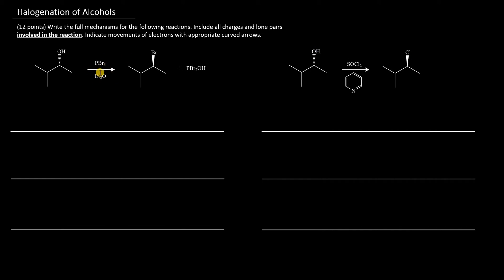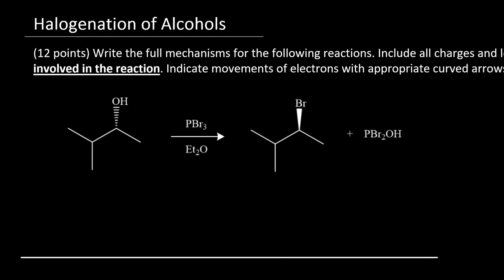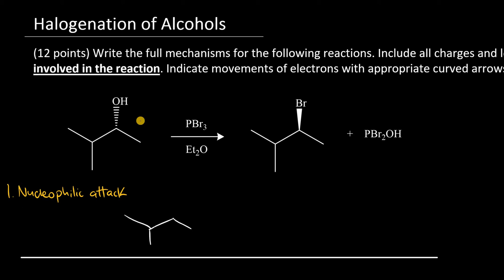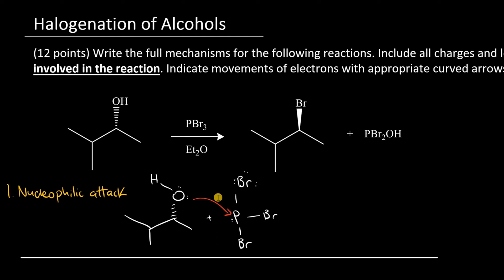The solvent for PBr3 is usually inert. The first step in the reaction is the nucleophilic attack of oxygen onto the phosphorus in phosphorus tribromide. We draw our reactant alcohol, and in the presence of PBr3, the electron-rich oxygen donates a pair of electrons and attacks the phosphorus, which causes one bromine to be lost as a leaving group.